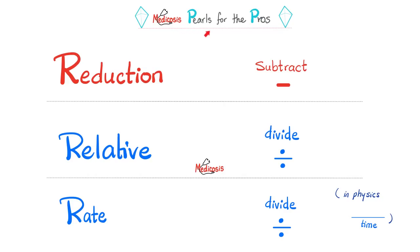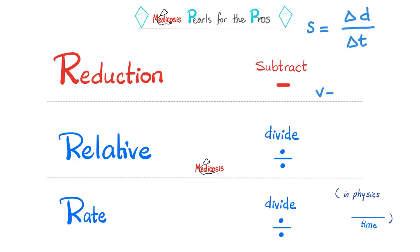Some mathematical pearls for the pros: reduction implies subtraction, so 'risk reduction' means we're going to subtract. When I say 'relative,' it implies division. When I say 'rate,' it also implies division — and in physics, the word rate implies division by time. So speed is the rate of change in distance, velocity is the rate of change of displacement, and acceleration is the rate of change of velocity.